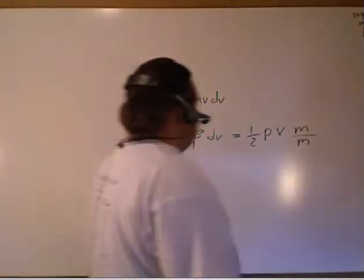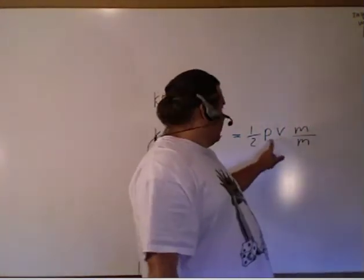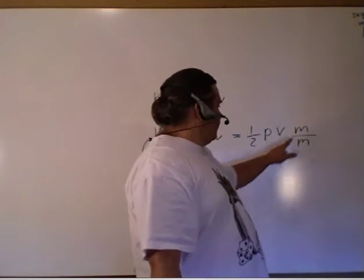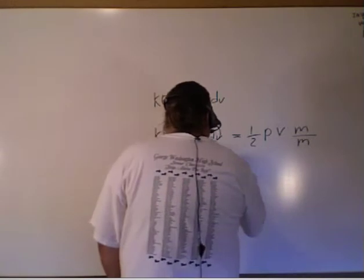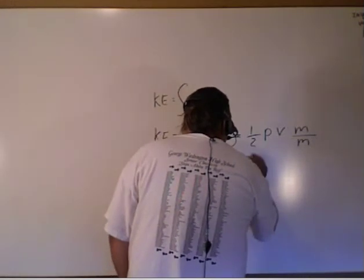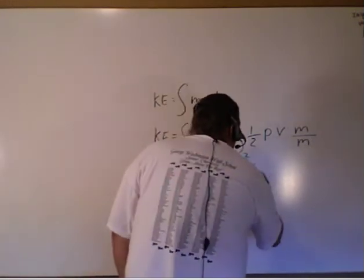So if I have m times v, I end up with another p. Okay? So mass times velocity is momentum. So I'm going to end up with one-half p squared over m.